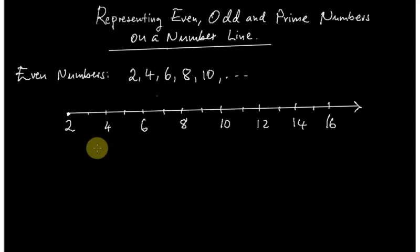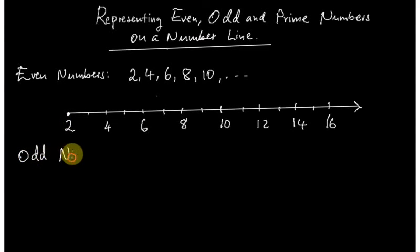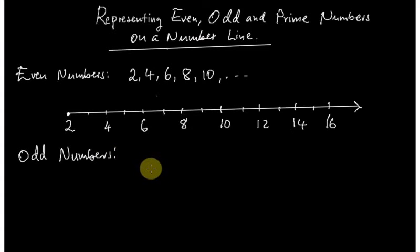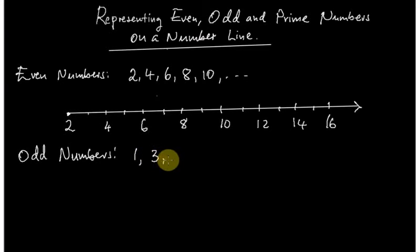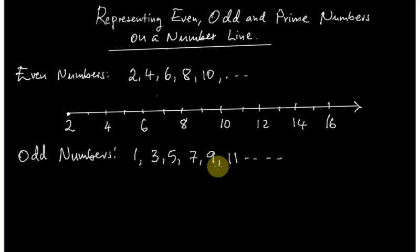Remember that even numbers are natural numbers which are divisible by 2. Now we have odd numbers. Odd numbers are natural numbers which are not divisible by 2. So for odd numbers: 1, 3, 5, 7, 9, 11, etc. — these are not divisible by 2.